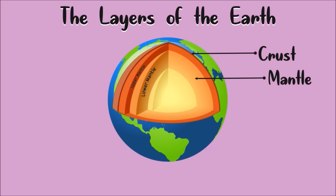Under the lower mantle is the central layer of the Earth, which is called the core. The core is divided into two parts: the liquid layer is the outer core, and the solid layer is called the inner core.